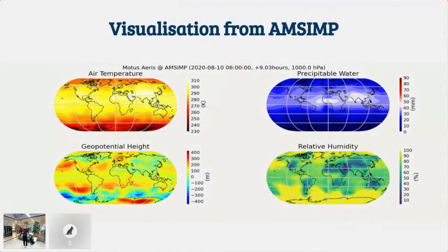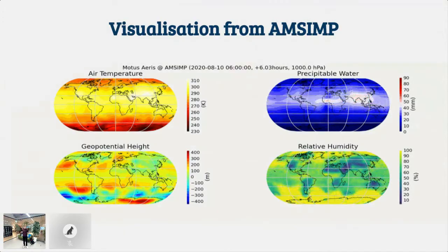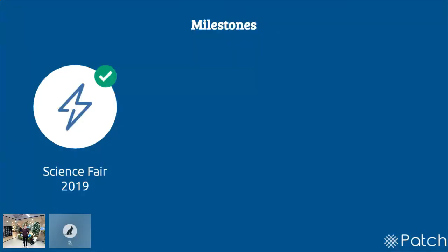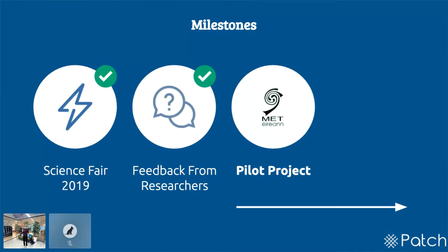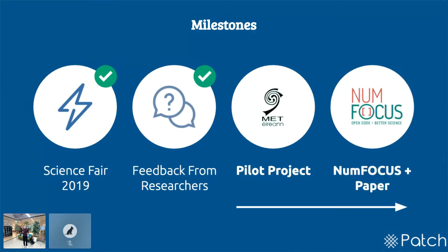AMSIMP is an open source project. Our vision is to make better weather tools available to everyone. The animation displayed on screen is an example of what the output of the software could look like. I originally started this project for a science fair. Throughout the program, Laura and I met with several world-class researchers who gave us beneficial and useful feedback. Over the next few months, we will improve and scale our models, with the goal of having Met Éireann researchers use AMSIMP in a pilot project.